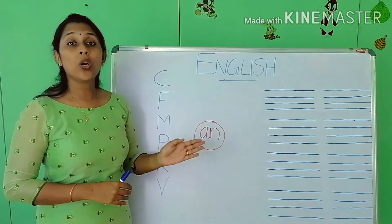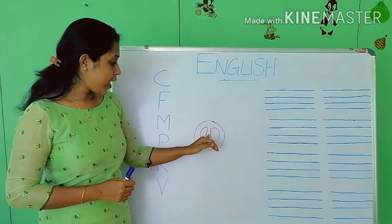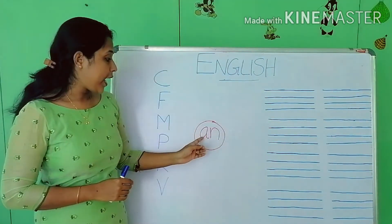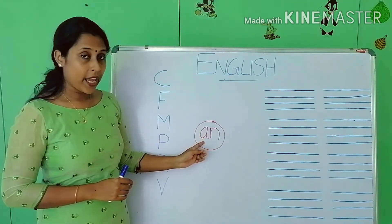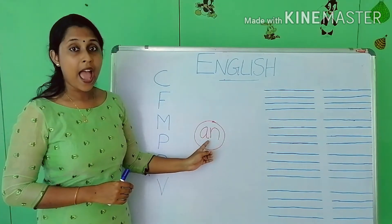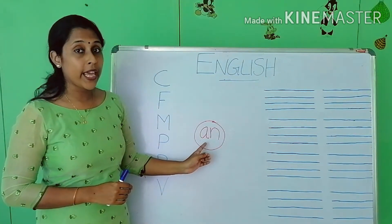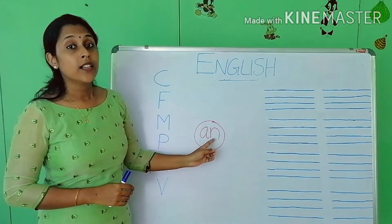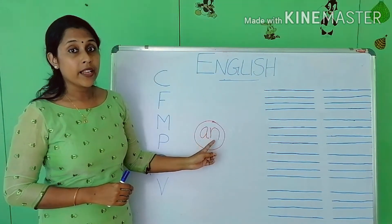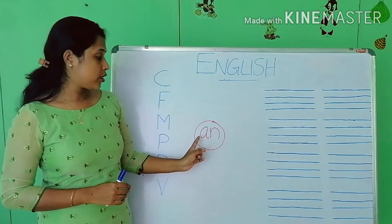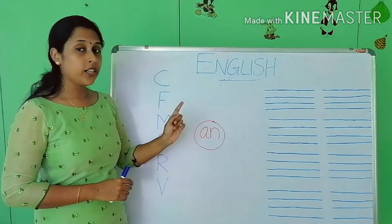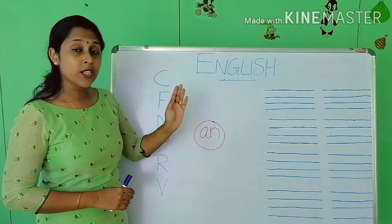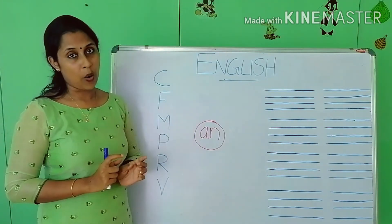Today we are going to learn the 'an' family words. The sound is 'an' — A and N. The sound of N is N. A, N — 'an'. So we are going to learn some words that end with the 'an' sound.